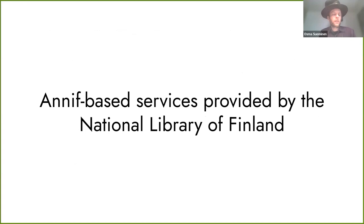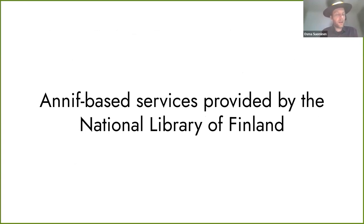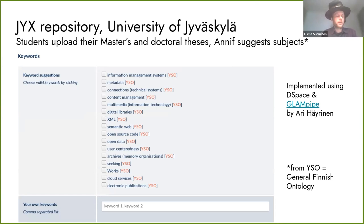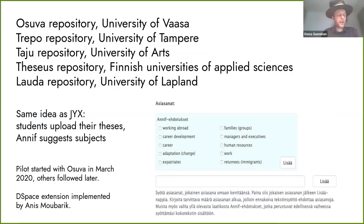The first system to use ANIF for semi-automated indexing in production was the JYX repository of the University of Jyväskylä. They use ANIF to suggest subjects for master's and doctoral theses uploaded as PDFs by students. Instead of filling in a blank form for keywords, students get a list of suggestions and can select the most appropriate ones, or add their own if necessary. The National Library of Finland also hosts many DSpace-based repositories, and at least five have started using ANIF. Automated subject indexing is rapidly being deployed in repositories used by Finnish university libraries.